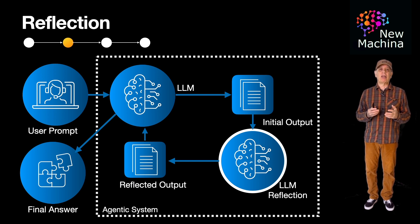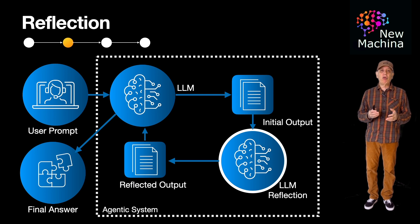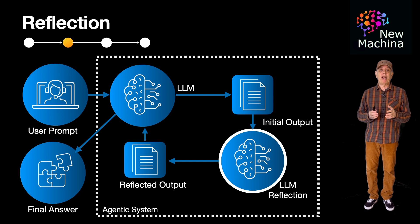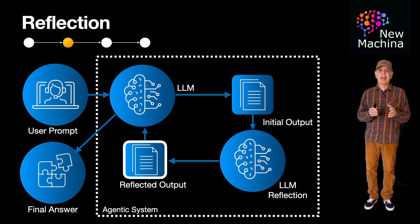In this next step, the agentic workflow initiates a self-review of the initial draft output. The LLM reviews its own work and the agentic system treats this as if it were a second opinion. The agentic workflow generates a reflection summary, which could explicitly call out potential flaws, gaps in logic, uncertainties, or assumptions.